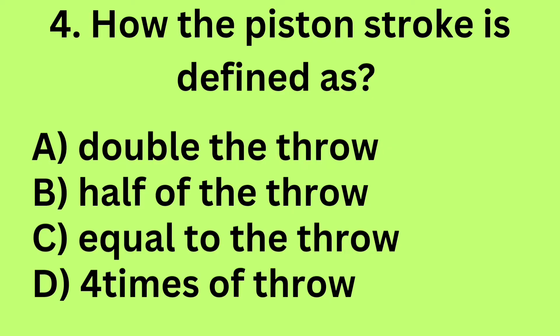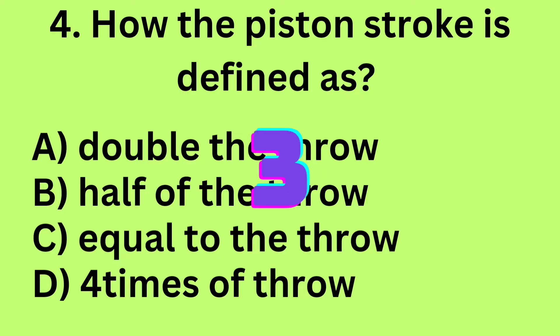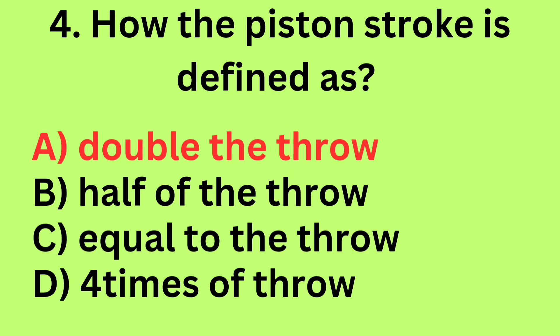Question 4: How the piston stroke is defined? A. Double the throw, B. Half of the throw, C. Equal to the throw, D. Four times of the throw. Answer: A. Double the throw.